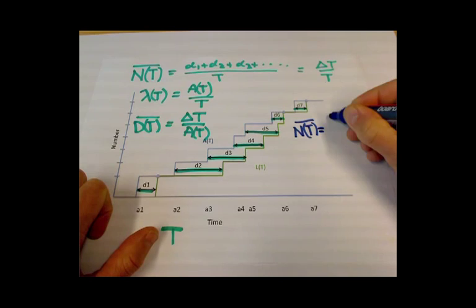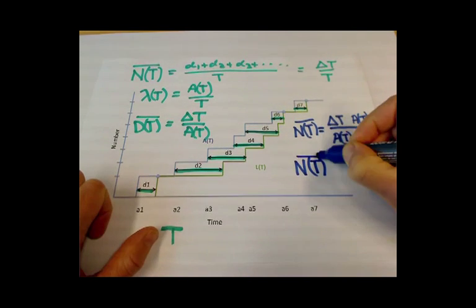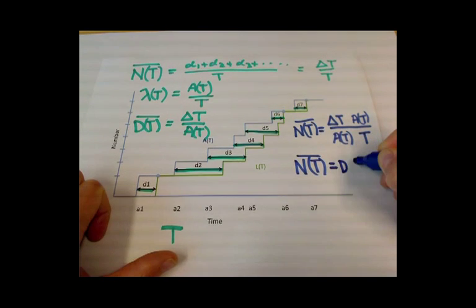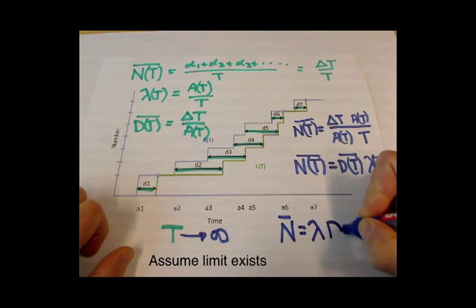If we now combine the three equations, average number in the system is equal to the average delay times the average arrival rate. And now that T goes to infinity and we have Little's formula.